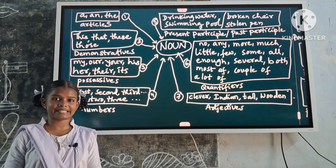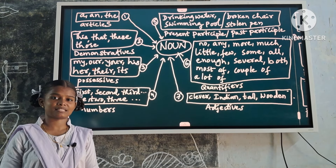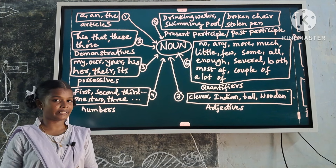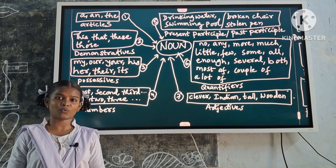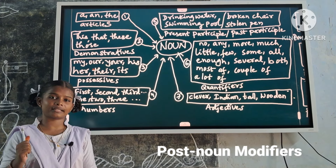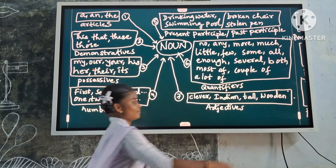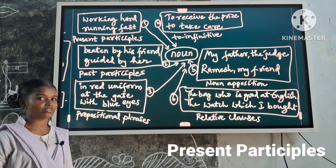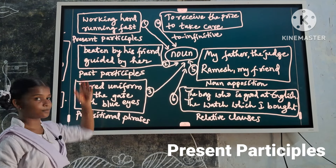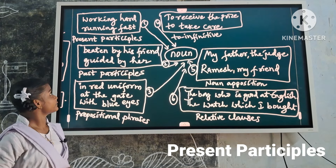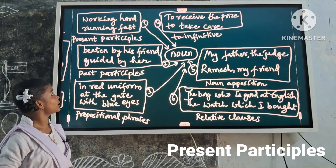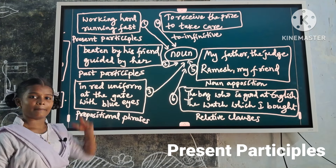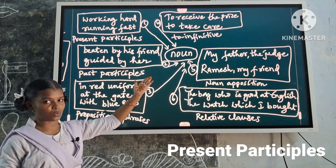Sometimes some modifiers go after the noun — these are called post-noun modifiers. First type: present participles. Examples: the boys working hard, the boys running fast. These are noun modifiers because they describe the noun.